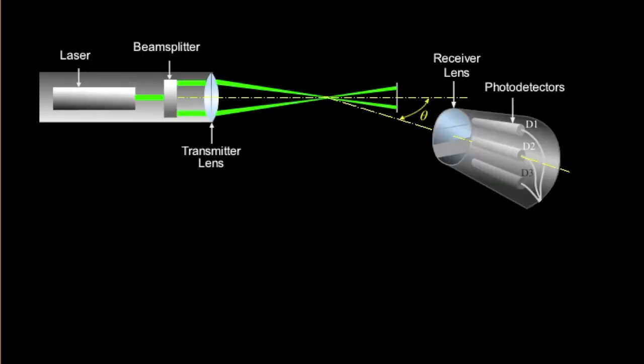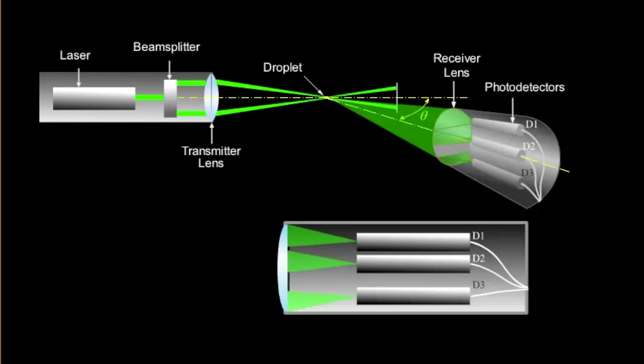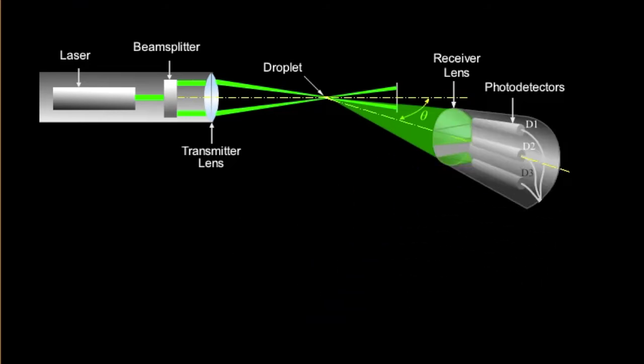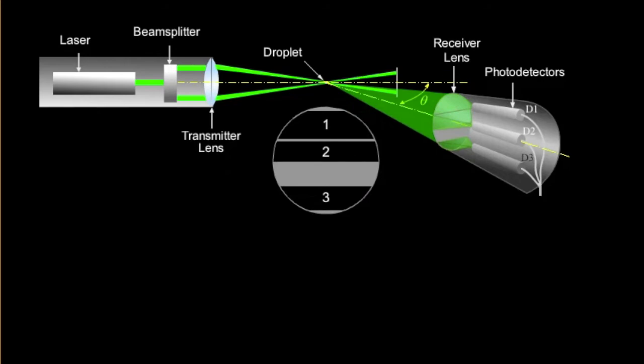Here you can see the transmitter. You can see the receiver. And in this receiver, we have three detectors. So the scattered light enters into the detectors. And by using the three signals and the phase shift between them, we can calculate the diameter of the droplet.